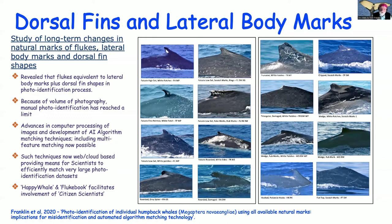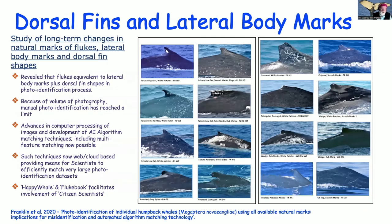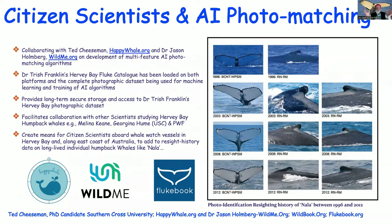These web and cloud-based techniques provide a means for scientists to efficiently match very large photo identification sets. The North Pacific humpback catalogues are enormous compared to our southern hemisphere catalogues, and they are currently re-analyzing everything using this new technology. The two groups we encountered were called Happy Whale and Fluke Book, and this is where citizen science fits into the story.